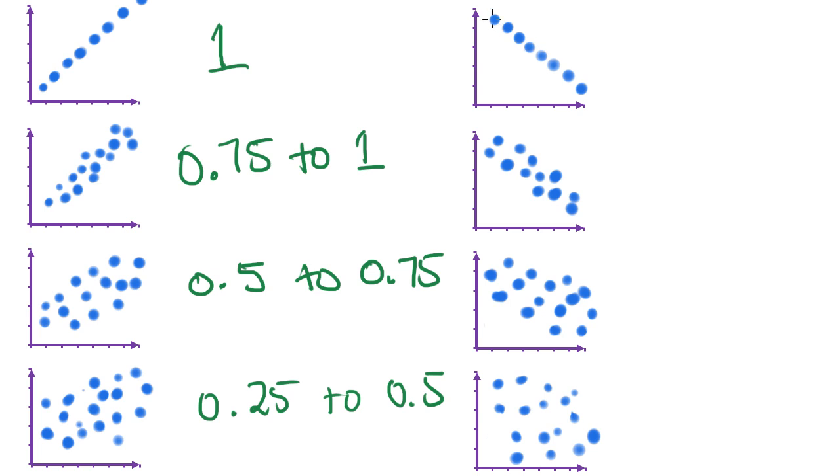So a perfect relationship that's a negative relationship has an r value of negative 1. A strong relationship in a negative direction would have an r value somewhere between negative 0.75 and negative 1. A moderately strong relationship in a negative direction would be from negative 0.5 to negative 0.75. And of course, a weak relationship that just happens to go in a negative direction would be somewhere between negative 0.25 and negative 0.5.